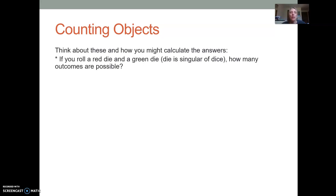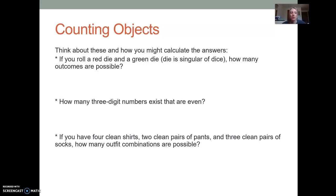First, if you roll a red die and a green die, so die is the singular of dice, how many outcomes are possible? Second, how many three-digit numbers exist that are even? And third, if you have four clean shirts, two clean pairs of pants, and three clean pairs of socks, then how many different outfit combinations do you have? So pause the video now and see what you come up with.